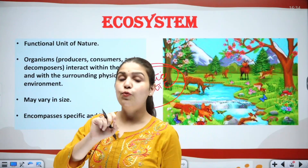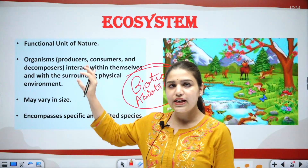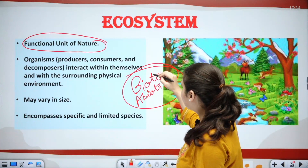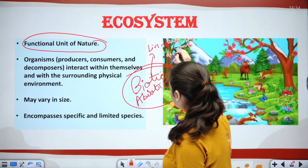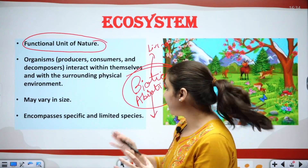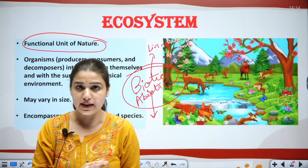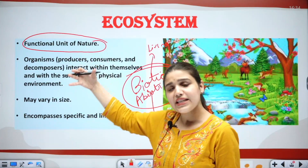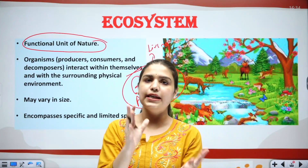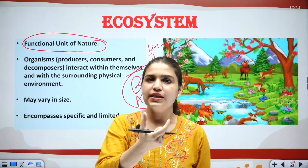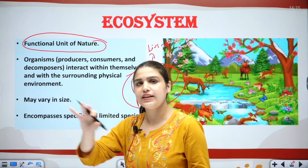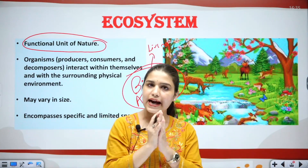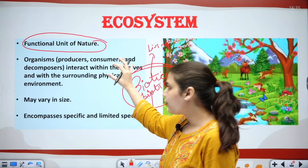Now when we come to ecosystem — what is ecosystem? Ecosystem is the functional unit of nature where biotic components, which are our living organisms, and abiotic components, which are our non-living elements, interact with each other and among themselves. So ecosystem is the functional unit of nature where living and non-living beings interact with each other.